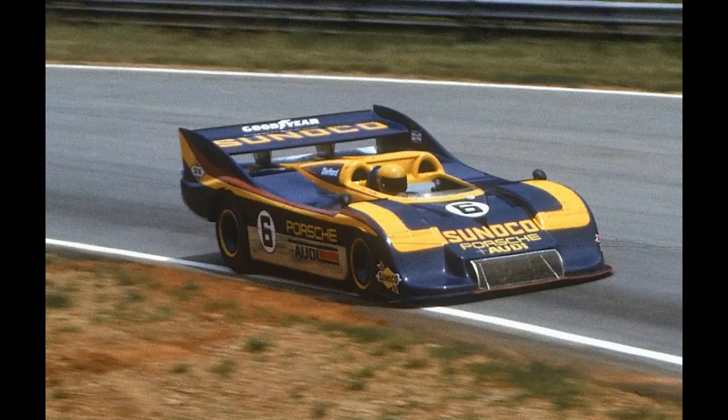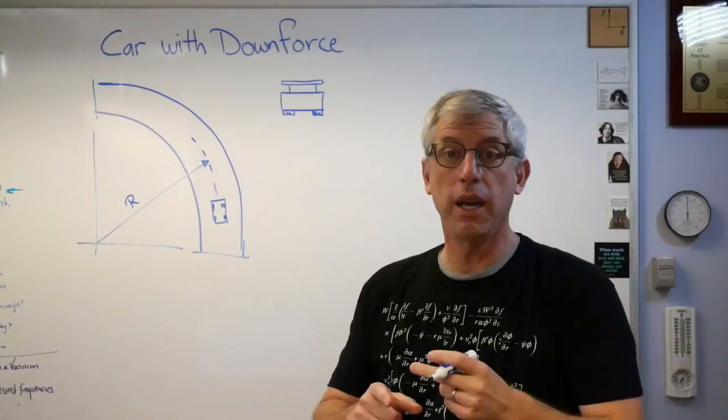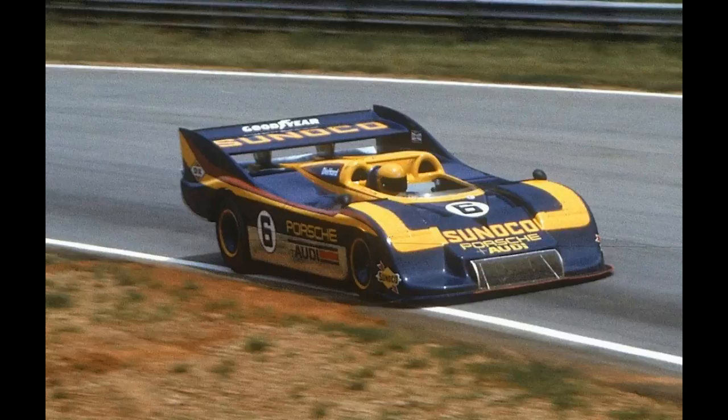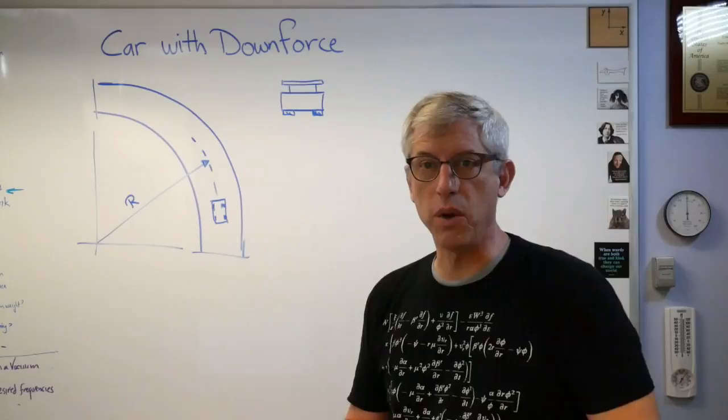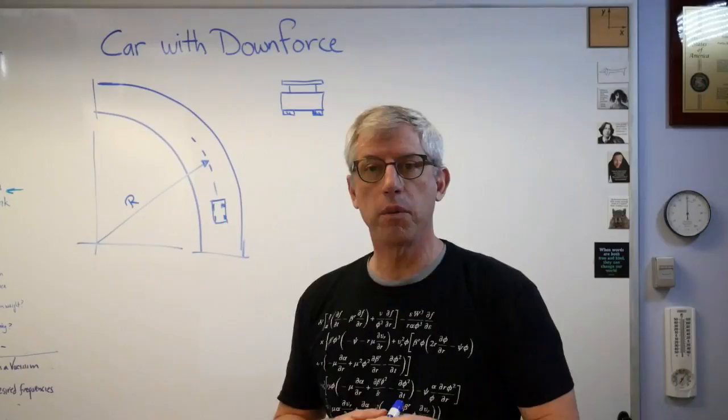It's got about a squillion horsepower in it and it's got this great big wing on the back and these big wide tires. There's probably also some aerodynamic downforce from the body of the car. In modern cars, that's something that happens quite a lot, but for right now let's just consider the wing on top of it.